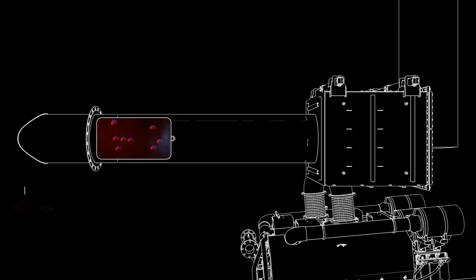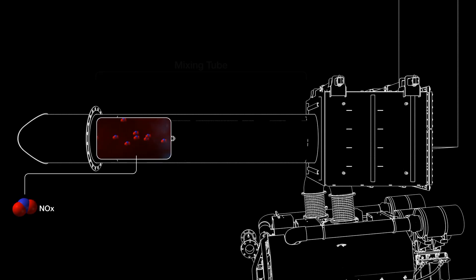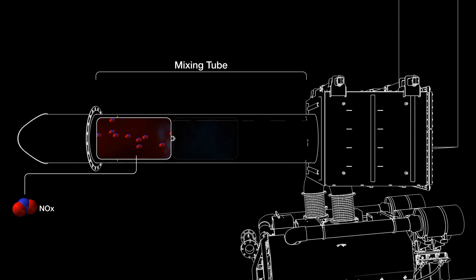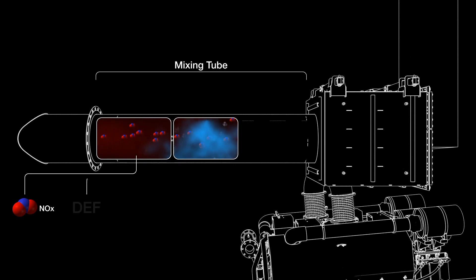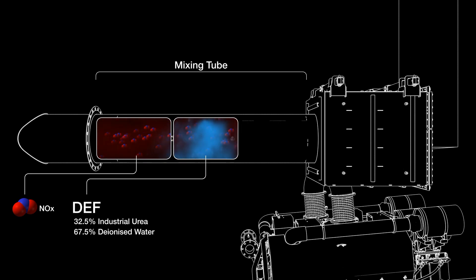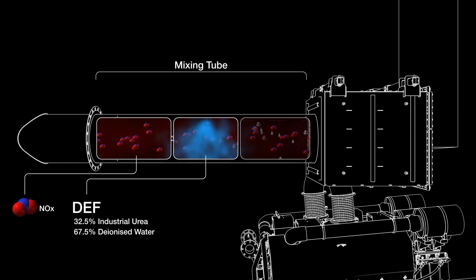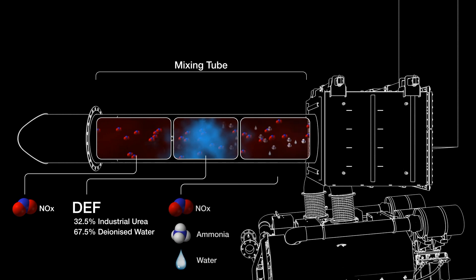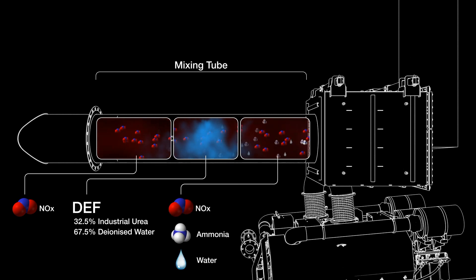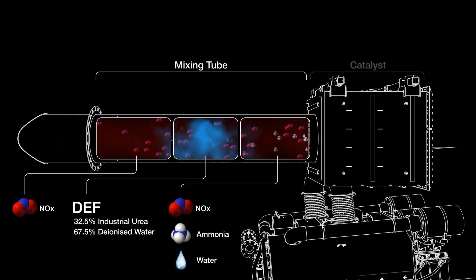Here we can see the exhaust gases containing nitrogen oxides entering the mixing tube. DEF is injected and the heat of the gases causes it to decompose into ammonia and water vapour before the mixture enters the catalyst.